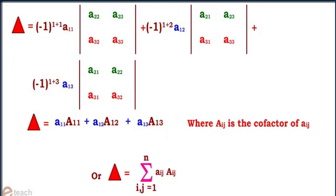This can be written in more simplified form as determinant equals summation i equals 1 to n of aij capital Aij.